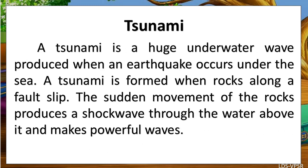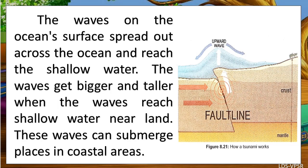Tsunami. A tsunami is a huge underwater wave produced when an earthquake occurs under the sea. A tsunami is formed when rocks along a fault slip. The sudden movement of the rocks produces a shock wave through the water above it and makes powerful waves. The waves on the ocean surface spread out across the ocean and reach shallow water, getting bigger and taller as they near land.